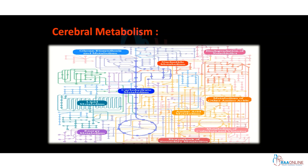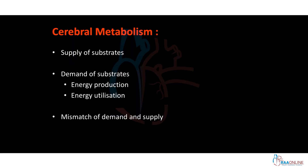The metabolism is a complex process involving multiple pathways occurring in multiple cellular compartments. For practical purposes, we will focus on only the glucose metabolism of the brain. Supply of substrates will be discussed in the Cerebral Blood Flow section. Coming to demand of substrates, the balance between energy produced and energy utilized determines the demand. We will also discuss the events that happen when there is a mismatch between demand and supply.